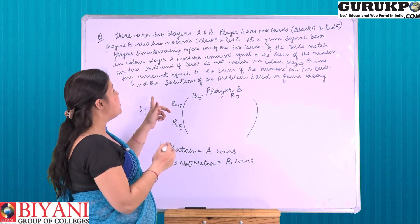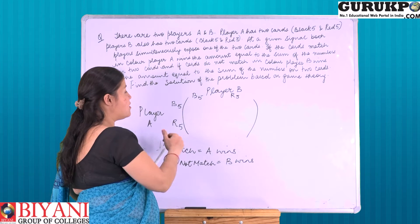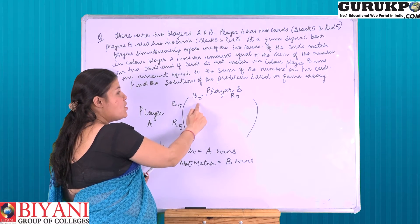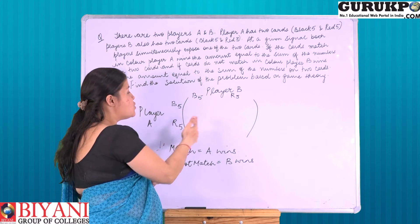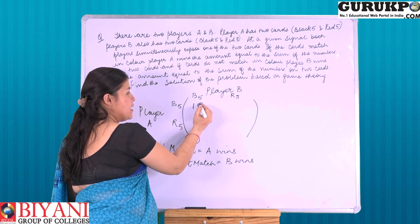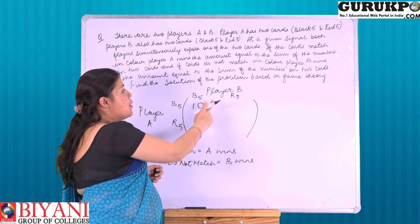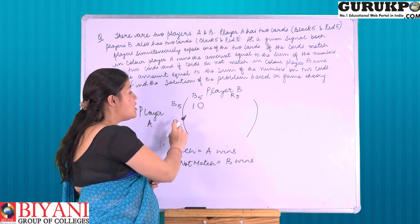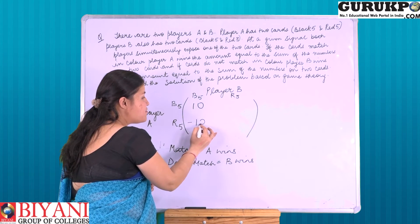Now find the solution of the problem based on Game Theory. When player A shows black 5 and player B also shows black 5, the cards match in colour, so A wins an amount equal to the sum, that is 10. When player A shows red 5 and player B shows black 5, the cards do not match in colour, so player B wins the amount, shown by the negative sign.